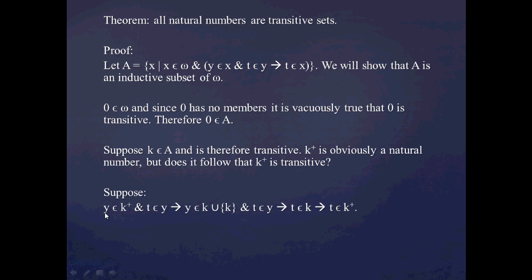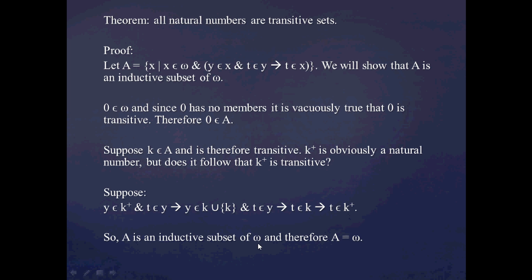So we started with the statement — Y is in K+ and T is in Y — and we've concluded that T must be in K+. So we've shown that K+ is transitive if K is transitive. We've shown that A is an inductive subset of omega, and therefore A equals omega. So we've shown that all natural numbers are transitive sets.